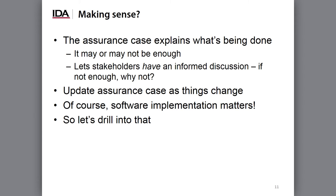Is this making sense? I'm walking through a number of graphs, but these graphs are not fundamentally complex. The graphs simply summarize the assurance case for this example system — explaining why we believe these actions are adequate for producing secure software. It may or may not be enough. The point is that these graphs give stakeholders an informed discussion. If a stakeholder believes the measures are not enough, the next question is why not? Those discussions can help everyone drill down to what should be done instead. When you decide to make a change for any reason, you update the assurance case so everyone can understand what has been agreed to.